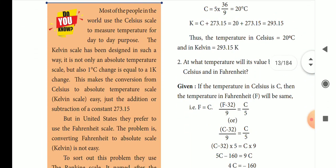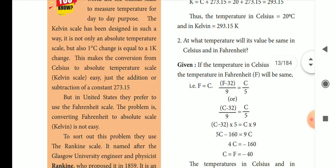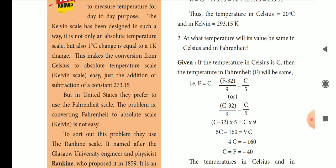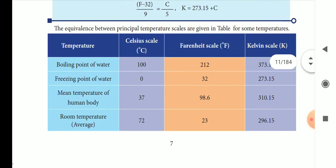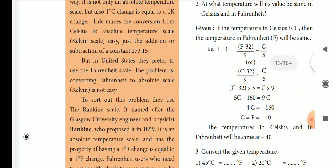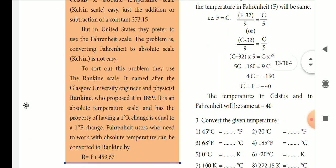In Celsius temperature measurement, 1 degree Celsius is equal to 1 Kelvin change. To convert, we simply add 273.15. So the formula is K is equal to 273.15 plus C. This makes conversion from Celsius to the absolute temperature scale easy — just addition or subtraction of the constant 273.15. In the United States, Fahrenheit is used, and Fahrenheit is related to the Rankine scale, which is the absolute scale for Fahrenheit.